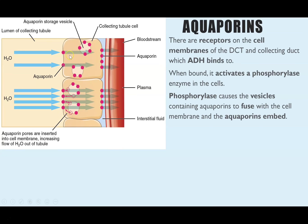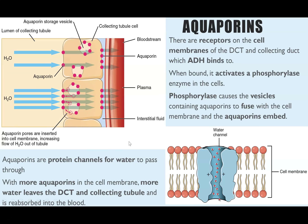When the vesicles fuse with the cell membrane, the aquaporins embed into it. In the top diagram you only have two aquaporins in the cell membrane, but because phosphorylase has been activated, vesicles fuse and extra aquaporins become embedded. Aquaporins are channel proteins which allow water to move through, so more aquaporins in the membrane means more water can pass out of the tubule and be reabsorbed into the blood.